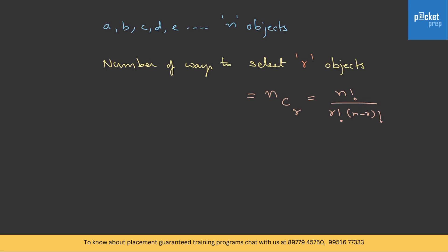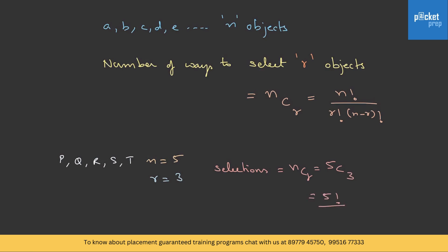Let's take an example. Suppose we have letters P, Q, R, S and T — so the number of letters is 5. If we pick up three letters at random, the number of combinations possible is NCR = 5C3, that is 5 factorial by 3 factorial into 2 factorial. 5 factorial is 120, 3 factorial is 6 and 2 factorial is 2. This works out to 10. That is how we calculate the number of selections from a set of objects.